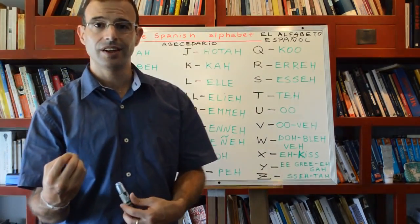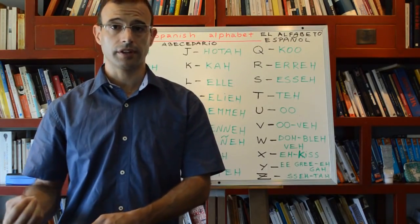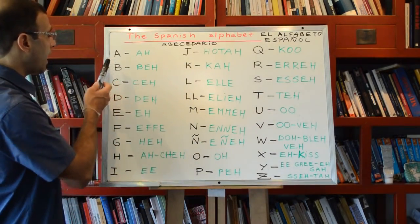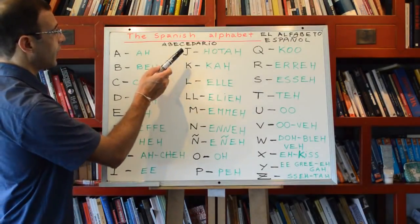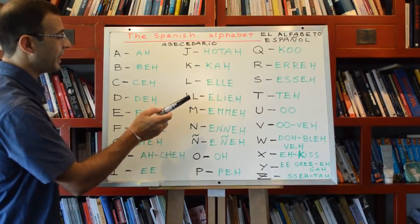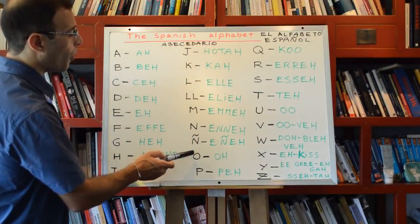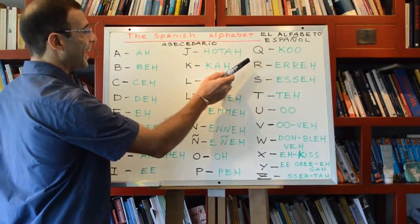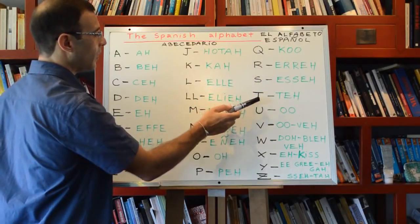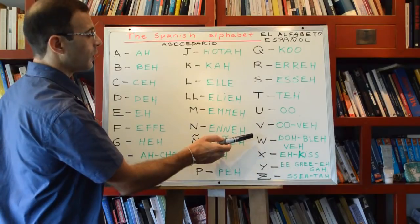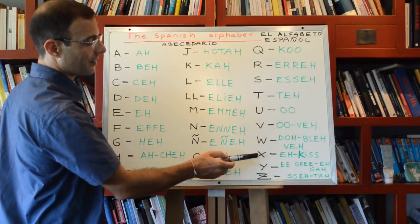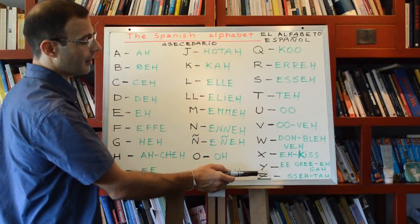Later I'll focus a bit more on each letter so I can help you to pronounce it correctly and I'll give you some hints on Spanish phonetics. Okay, A, B, C, D, E, F, G, H, I, J, K, L, LL, M, N, Ñ, O, P, Q, R, S, T, U, V or UV, W, X, Y, Z.